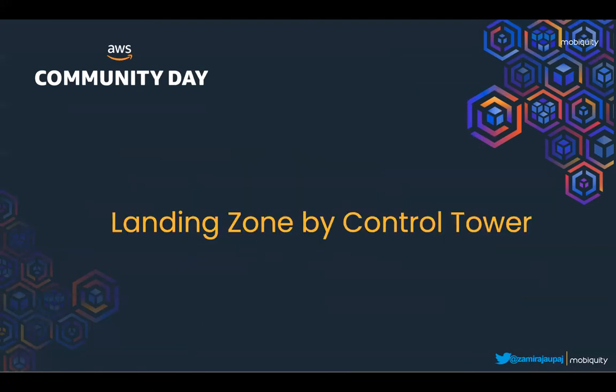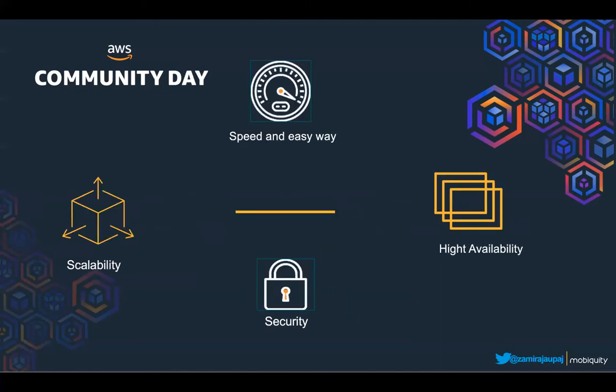AWS Control Tower provides an easy way to set up, govern, and maintain secure compliance across multiple AWS environments based on best practices. Let's see the solution provided by Control Tower — its features and capabilities. There are four important things to remember for landing zone. First, speed and ease of use: Control Tower lets you automate setup with just a few clicks using an established blueprint, configuring AWS environments such as multiple AWS structure, identity and access management, and account provisioning workflows.